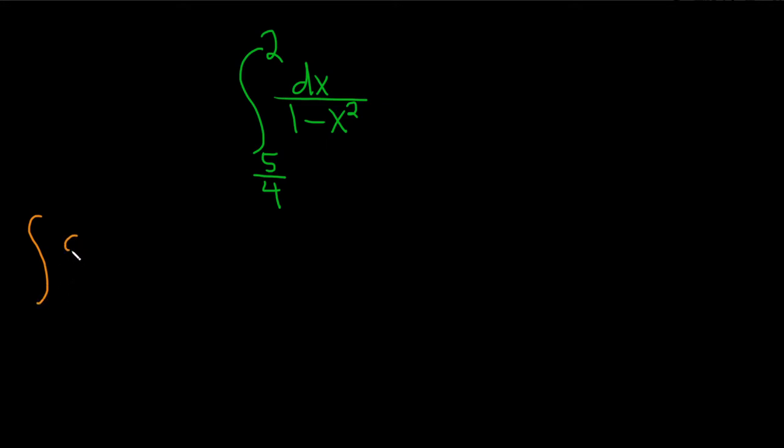The formula says if you have the integral of du over 1 minus u squared, this is equal to 1 half times the natural log of the absolute value of 1 plus u over 1 minus u, and then plus our constant of integration, capital C. So this is a formula that you pretty much see in most calculus books.